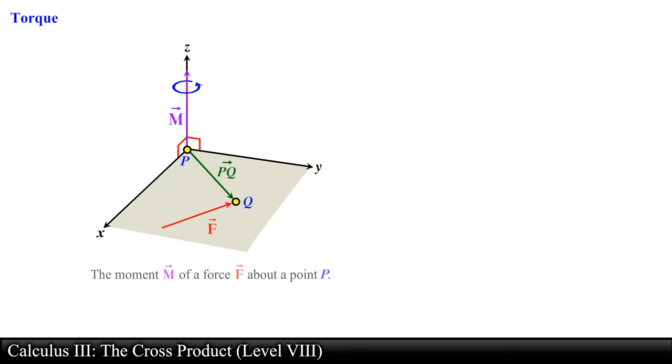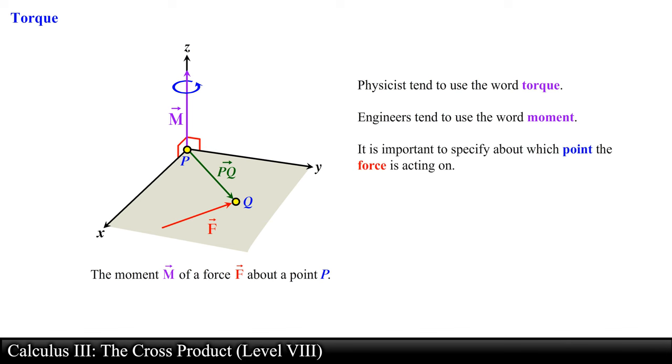In physics, the cross product can be used to measure torque. This is also known as the moment M of a force F about a point P. Usually physicists tend to use the word torque while engineers usually use moment.